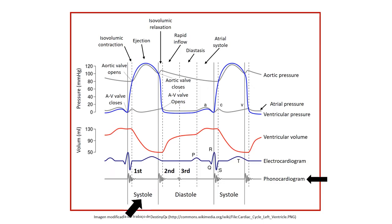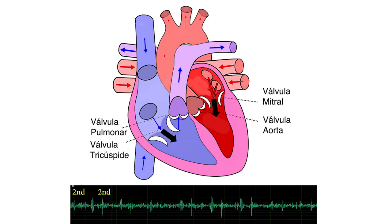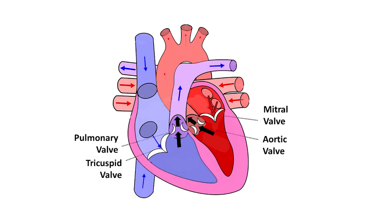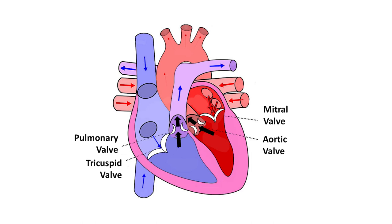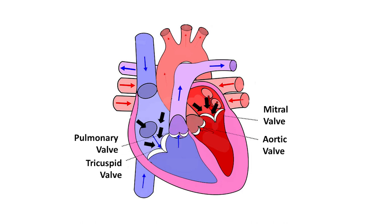Ventricular systole occurs between the first and the second tones, and ventricular diastole occurs between the second tone and the first tone of the subsequent cycle. Since the duration of systole is approximately half of diastole, it is easy to differentiate between the two tones. The doubling of the second tone can occur on expiration, as it increases venous return due to a decrease in intrathoracic pressure, generating a delay in the closure of the pulmonary valve.